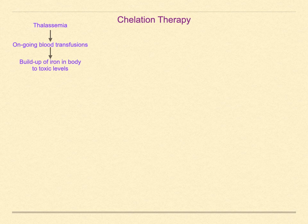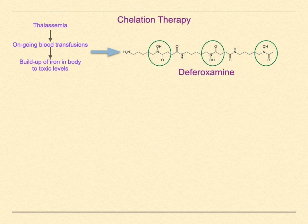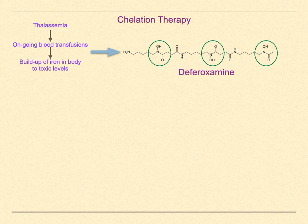Several have been used and new ones are being developed. Deferoxamine is a common one. The two oxygens on each of the three hydroxamate groups are the six ligand binding sites for the iron. This therapy requires overnight subcutaneous transfusions as much as five times a week for life. But no transfusions leads to death within a couple of years.